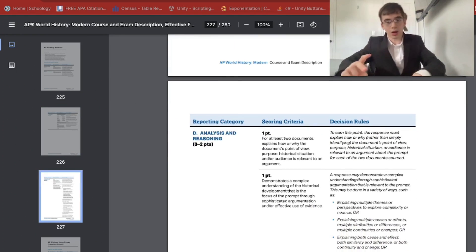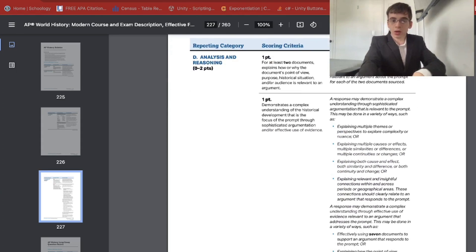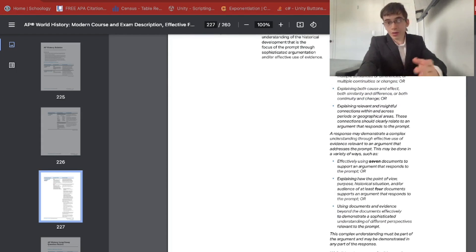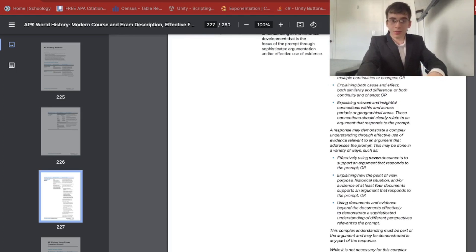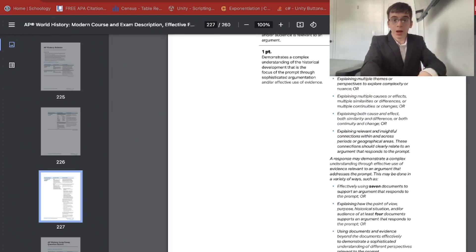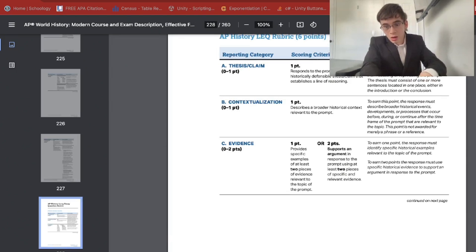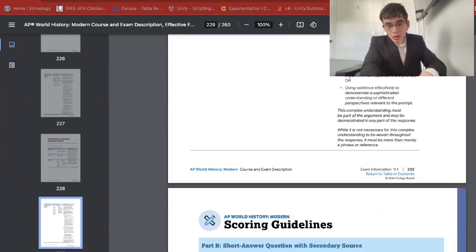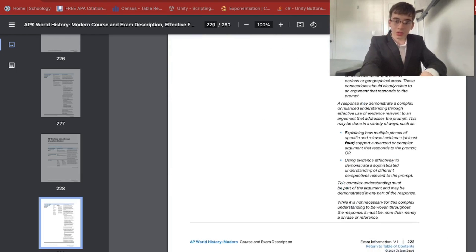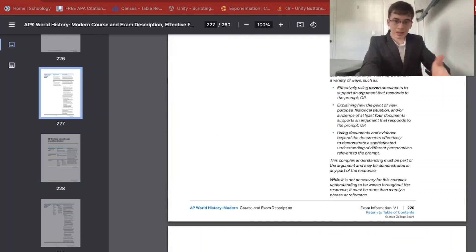For analysis and reasoning, you need to HIPP two documents instead of three to score that one point, as well as the complexity description on how to earn that extra point has been clarified. And there are numerous ways that are literally stated on how you can achieve it. Whereas in the past, the complexity point was kind of tough to earn because you didn't really have specific criteria. Now you have a more detailed plan. And this goes the same for LEQ.